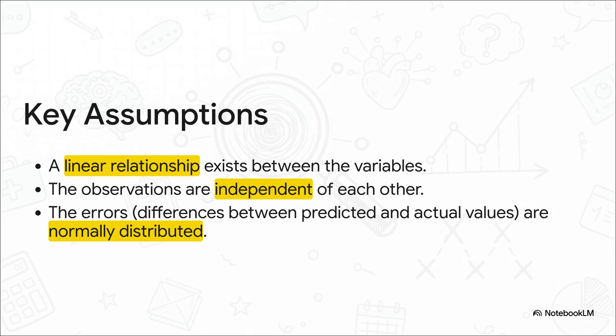Here are a few of the big ones. First, the model assumes the relationship is basically a straight line. Second, each piece of data has to be independent of the others. And third, the errors — the small differences between the predicted values and the real ones — have to be normally distributed. That really just means small misses are common and big misses are rare, making a classic bell curve shape. It's this kind of rigor that makes it real science.